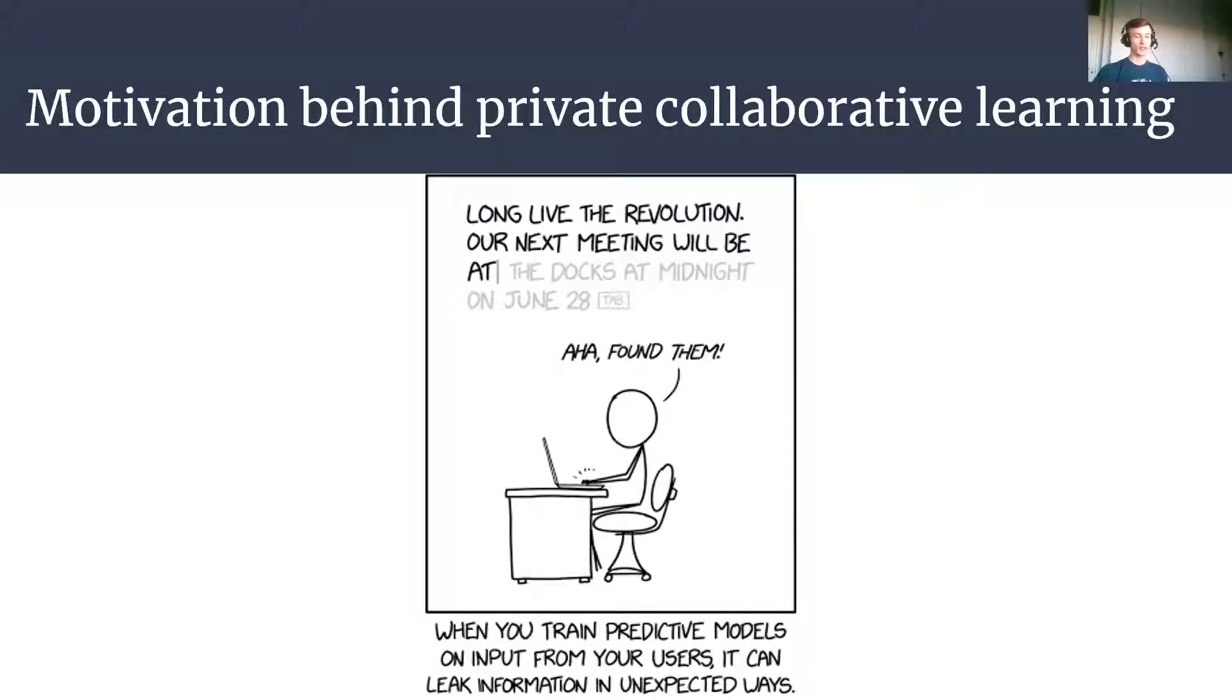And the second issue is that the models that we use in collaborative learning tend to remember too much about each individual participant, potentially resulting in leakages of features or even individual training images later as we continue with the training process.